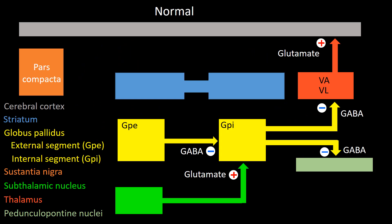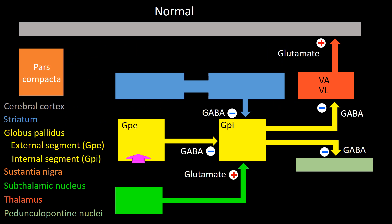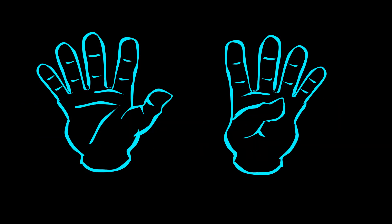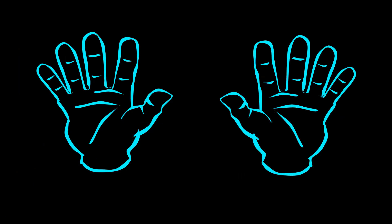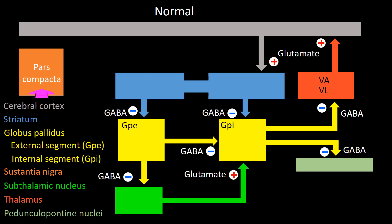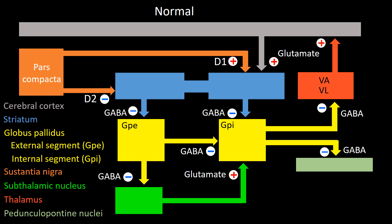The sixth connection goes from the striatum to the internal segment of the globus pallidus — inhibitory. The seventh goes from the external segment of the globus pallidus to the subthalamic nucleus — inhibitory. The eighth goes from the striatum to the external segment of the globus pallidus — inhibitory. The ninth goes from the cerebral cortex to the striatum — this is an excitatory connection. The tenth goes from the substantia nigra to the striatum — this is an inhibitory connection mediated by dopamine 2.